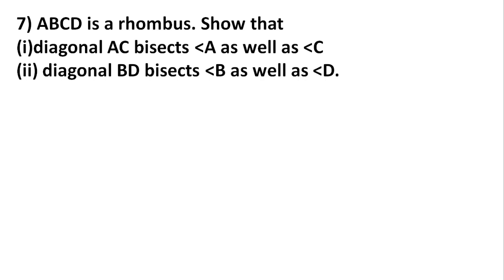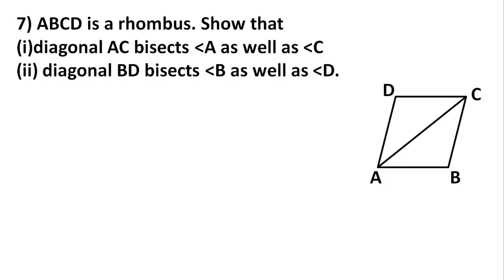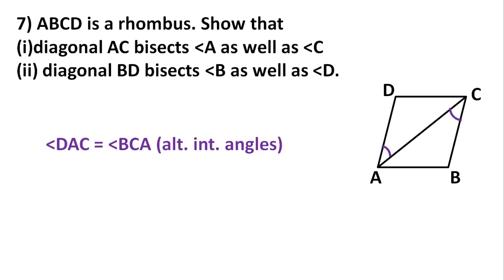Moving to the second question — Question 7. The question is: ABCD is a rhombus. Show that diagonal AC bisects angle A as well as angle C. That's the first part. The second part: prove that diagonal BD bisects angle B as well as angle D. This is actually the converse of Question 6. We need to draw the figure. Given: ABCD is a rhombus, meaning all sides are equal and opposite sides are equal and parallel.